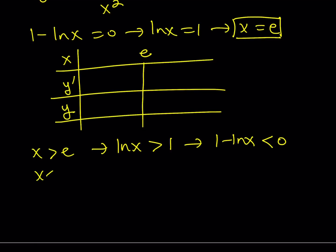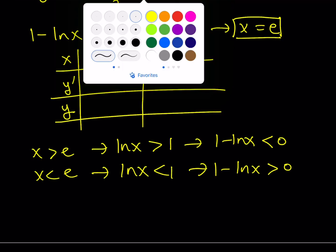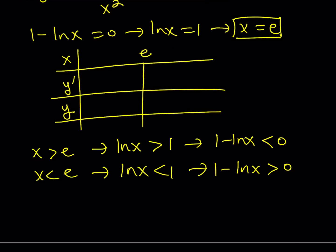And, otherwise, if x is less than e, ln x is going to be less than 1. And if you subtract something less than 1 from 1, obviously, you're supposed to get a positive quantity. Therefore, we can put the following signs on the table. So, if x is greater than e, the derivative is negative. Otherwise, it's positive. And, of course, at e, the derivative is 0.